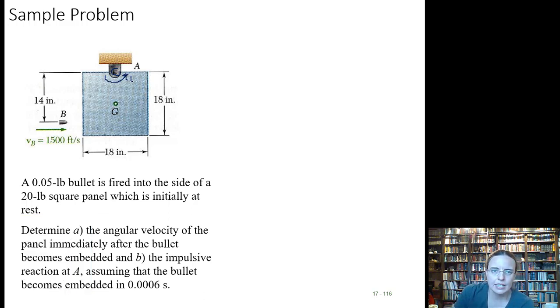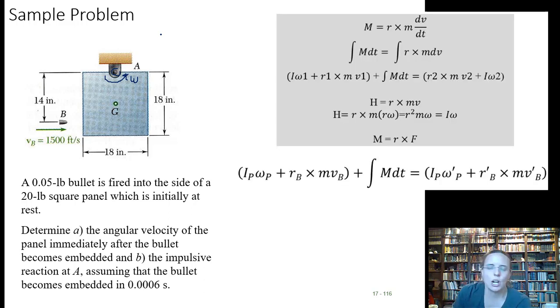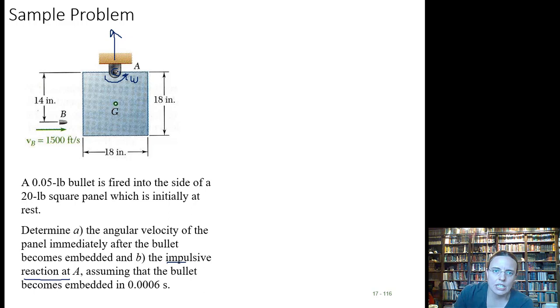The block is 20 pounds, and it's initially at rest. So we want to know the angular velocity of the panel immediately after the bullet becomes embedded. So angular velocity. We are looking for some kind of an omega here, right? And when you think of angular velocity, you should immediately think r cross mv. V is r omega. So r cross m, r omega, r squared m omega, i omega. We're looking at the inertia of the plate here. And we want to know the impulsive reaction at A. So this pin at A, anywhere it touches, there's going to be some kind of a force here.